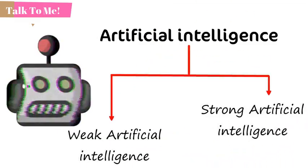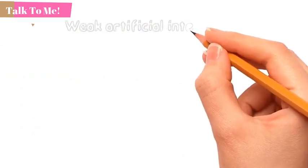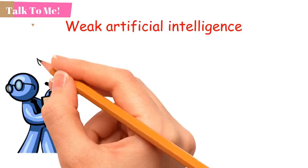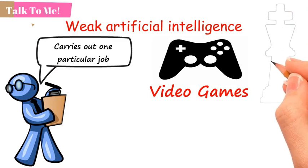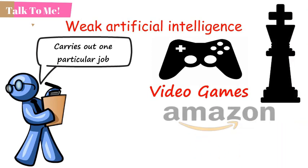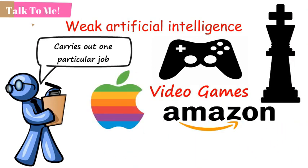Weak artificial intelligence embodies a system designed to carry out one particular job. Weak AI systems include video games such as chess and personal assistants such as Amazon's Alexa and Apple's Siri. You ask the assistant a question, it answers it for you.